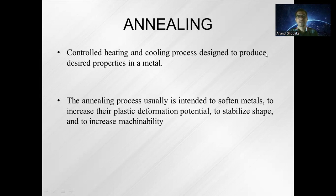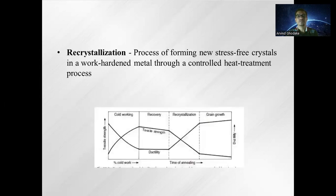Annealing also results in the removal of stressed grains and replacement with stress-free grains. A recrystallization process is also carried out in annealing — that is the process of forming new stress-free crystals or grains in the work-hardened metal through a controlled heat treatment process. Here you can see the diagrammatic representation of recrystallization and the overall annealing heat treatment.